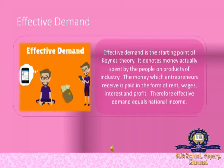Effective demand signifies the money spent on consumption of goods and services and on investment. The total expenditure is equal to the national income, which is equivalent to the national output. The relationship between employment and output of an economy depends upon the level of effective demand, which is determined by aggregate supply and aggregate demand. Effective demand will be determined by two determinants: consumption and investment expenditures. The consumption function depends upon income of the people and marginal propensity to consume.